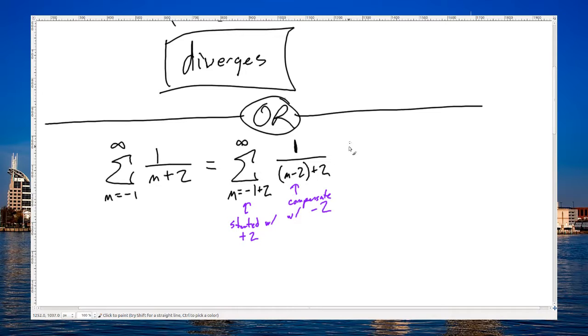Alright, and that's so that when I actually plug everything in, I get the same numbers as before. I'm starting with, actually, it'll be easier to see when I simplify. So, let's simplify. And so, I have the series, m equals negative 1 plus 2 is 1, to infinity. And here, the negative 2 and positive 2 cancels. That's 1 over m.